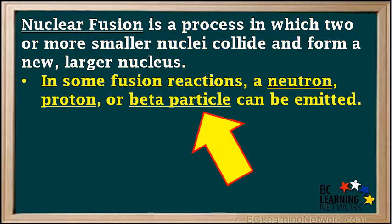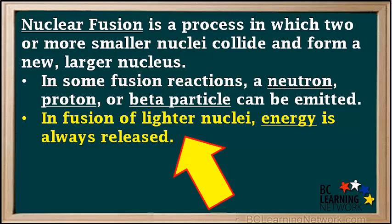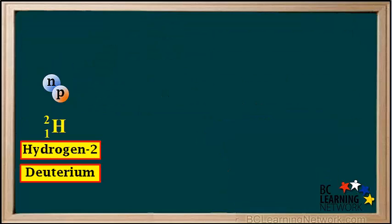In some fusion reactions, a neutron, proton, or beta particle can be emitted. In fusion of lighter nuclei, energy is always released. Let's look at an example of fusion.